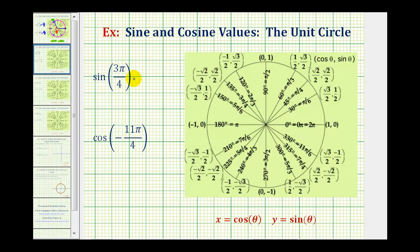We want to find the exact trig function values using the unit circle. The great thing about the unit circle is that if we sketch the angle in standard position, the point where the terminal side intersects the unit circle gives us both the cosine and sine function values, where x equals cosine theta and y equals sine theta.